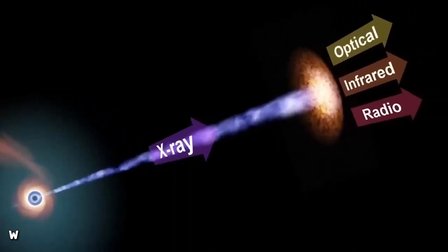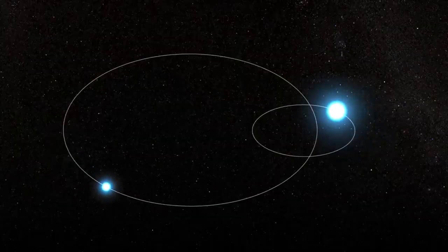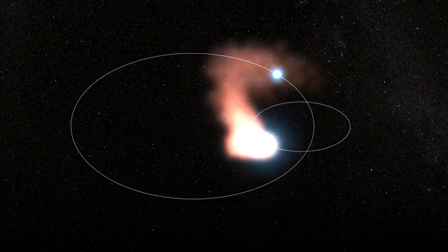Webb also captured WR 140, a Wolf-Rayet star, in October 2022. The star is a binary or dust-forming double star system.